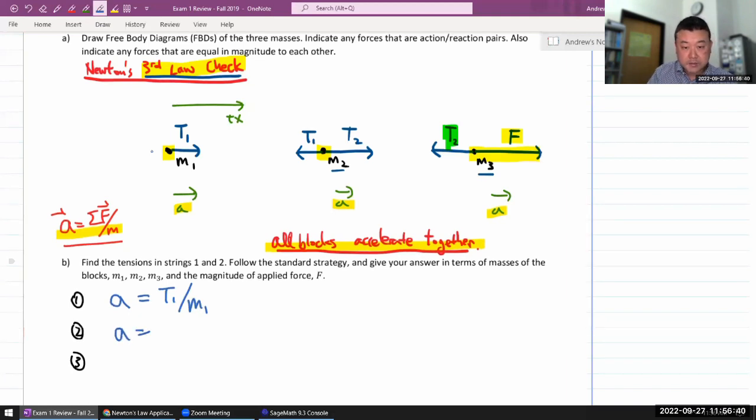Acceleration for the second block is given by the net force, T2 minus T1. I'm putting the directions into the signs, the T1 being leftward is reflected in this minus sign, divide by M2. Remember, it's always the mass of the object whose equation you are writing that this mass is for. Equation number three for object three, acceleration, same acceleration is equal to the net force, applied force minus, and it's just the T2. I don't have to worry about T1, T1 has been taken care of at this step.